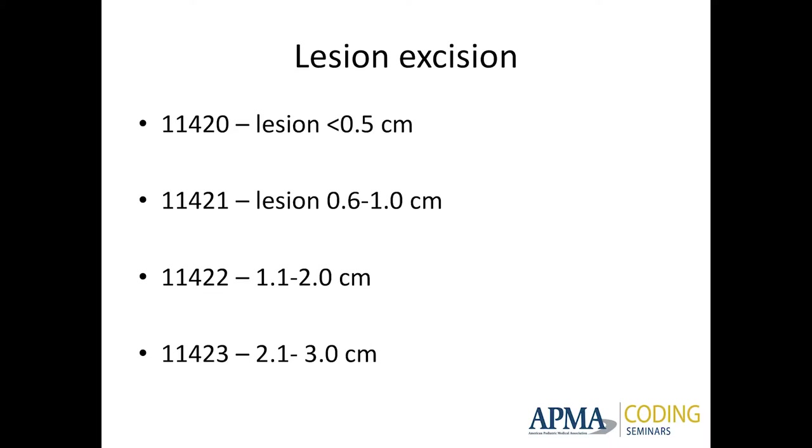Q: When recording the lesion, do you use the size of the incision or the size of the lesion itself? A: It's the size you took out — the square centimeters of what you removed. Whether you're doing a double ellipse or a circular excision, just figure out how big the wound is that you left. This also includes closure of the wound. You can't bill additionally to close the wound once you take that lesion out — that's included in the code. If you decide not to close it, you need to give a reason in the chart as to why.